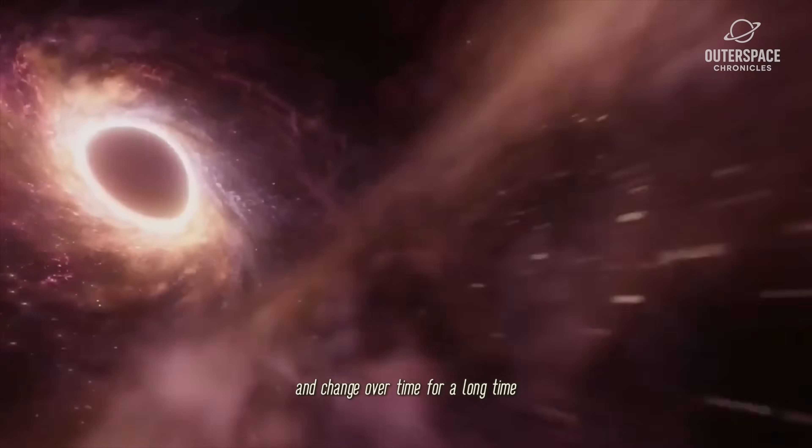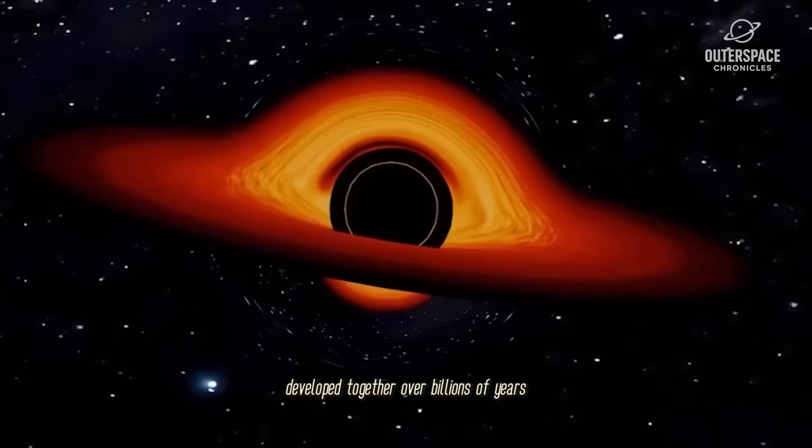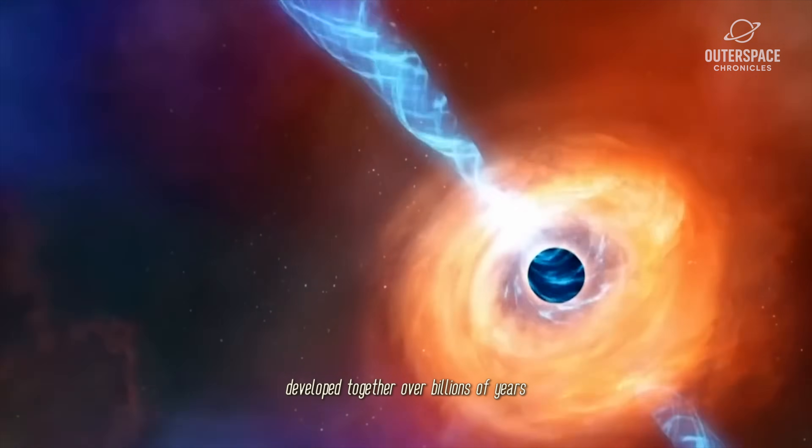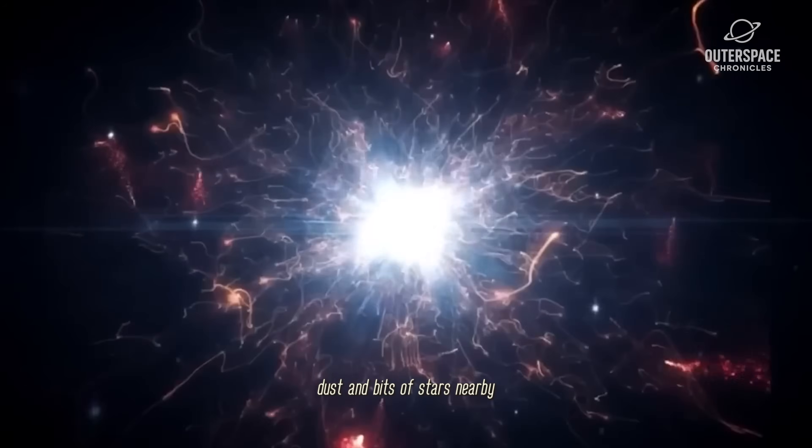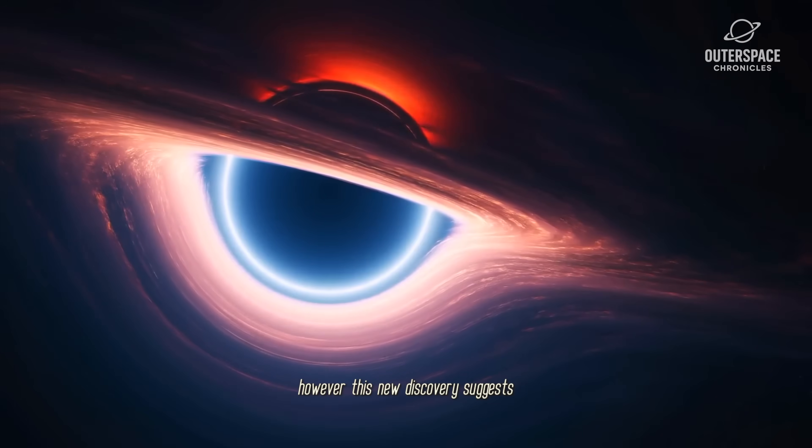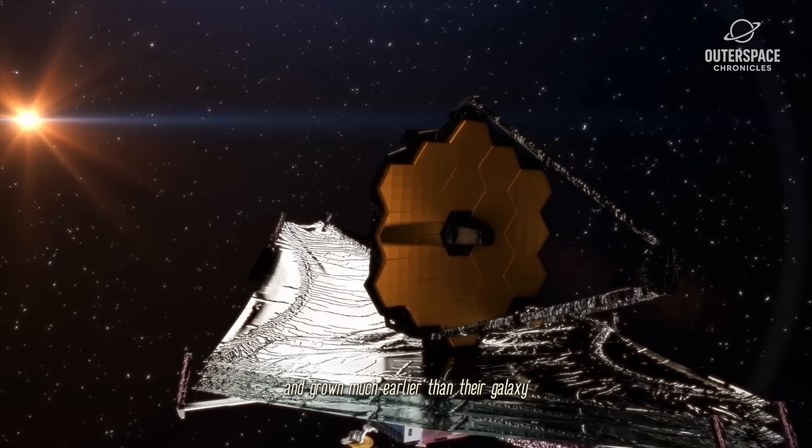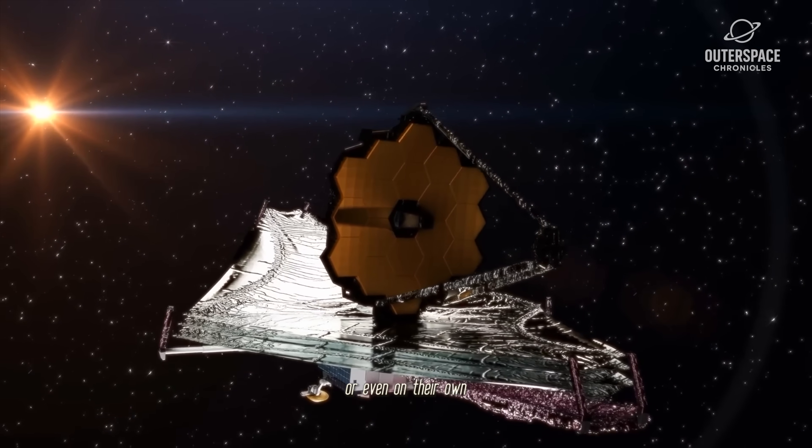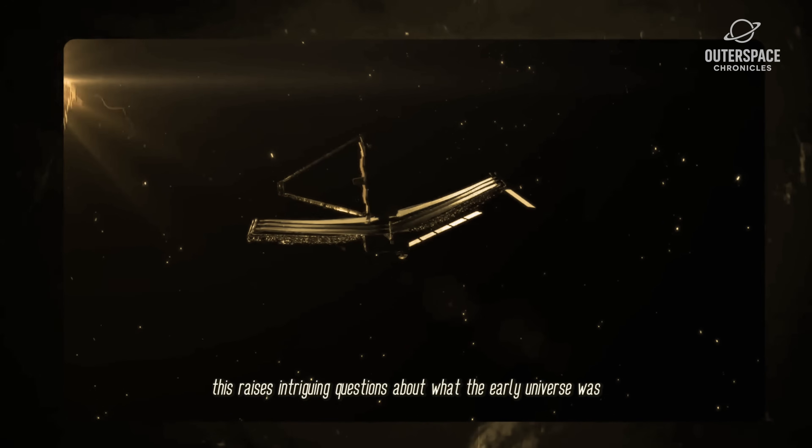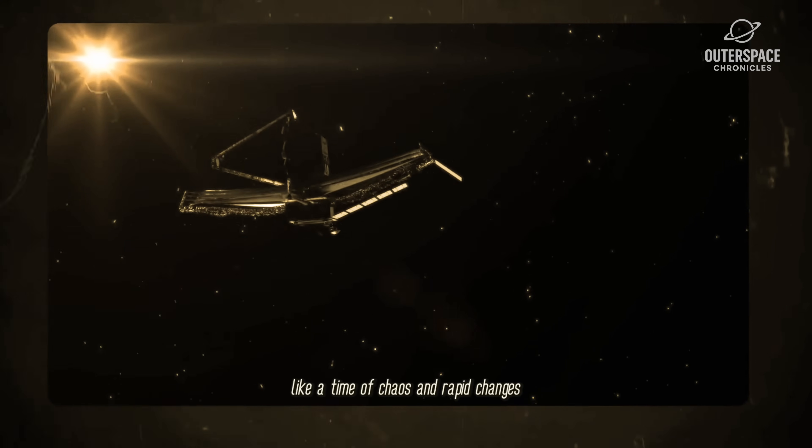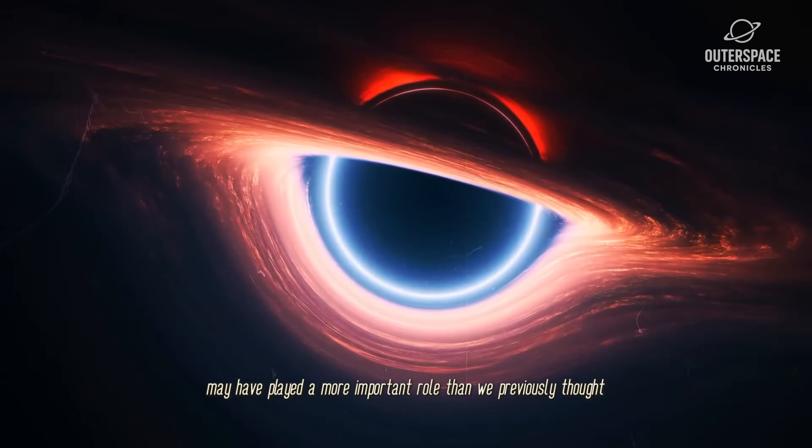For a long time, scientists thought that black holes and the galaxies around them developed together over billions of years. They believed that black holes slowly gain mass by pulling in gas, dust, and bits of stars nearby. However, this new discovery suggests that some black holes might have formed and grown much earlier than their galaxy, or even on their own. This raises intriguing questions about what the early universe was like, a time of chaos and rapid changes, when black holes may have played a more important role than we previously thought.